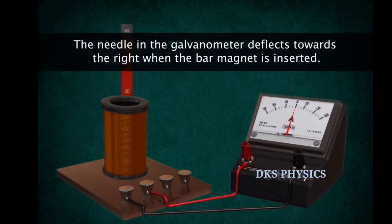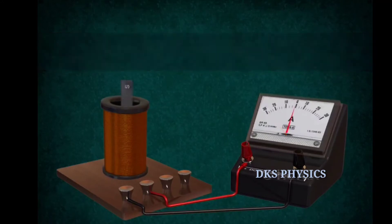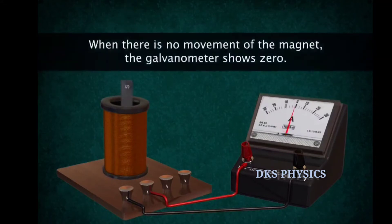There is a deflection towards the right in the galvanometer when the bar magnet is inserted into the coil. There is a deflection towards the left when the bar magnet is removed from the coil. No current is induced when the magnet is at rest near the coil.